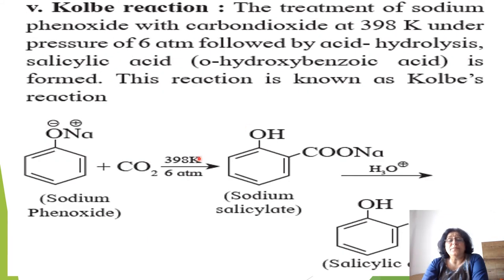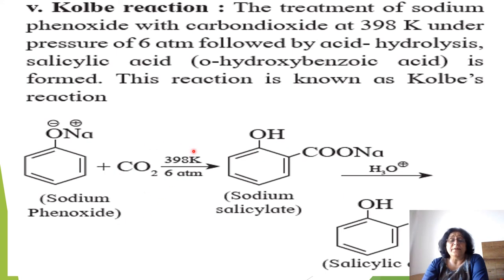Kolbe reaction: sodium phenoxide is treated with CO₂ at 398 Kelvin and 6 atmospheric pressure, forming sodium salicylate. On acid hydrolysis, sodium salicylate gives ortho-hydroxybenzoic acid, also known as salicylic acid.